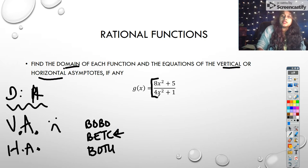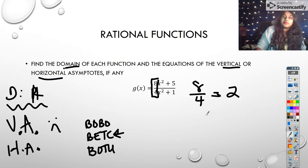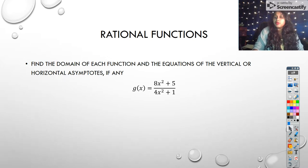So I look at its coefficients, which are eight over four, which simplifies down to two. So that means that I have a horizontal asymptote at y equals two. So there we have it. We have all those points determined.